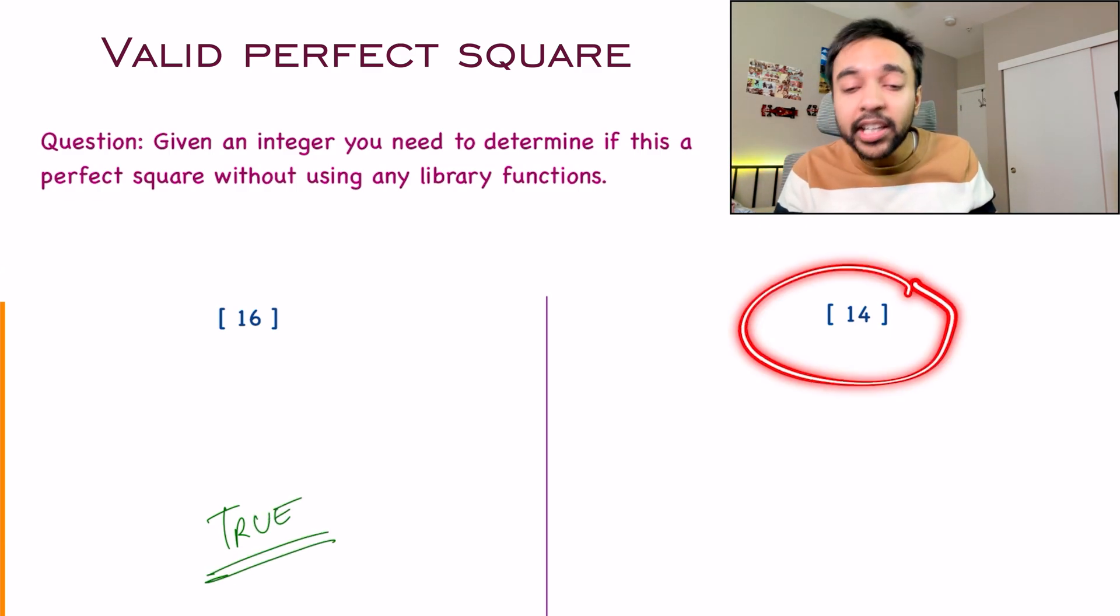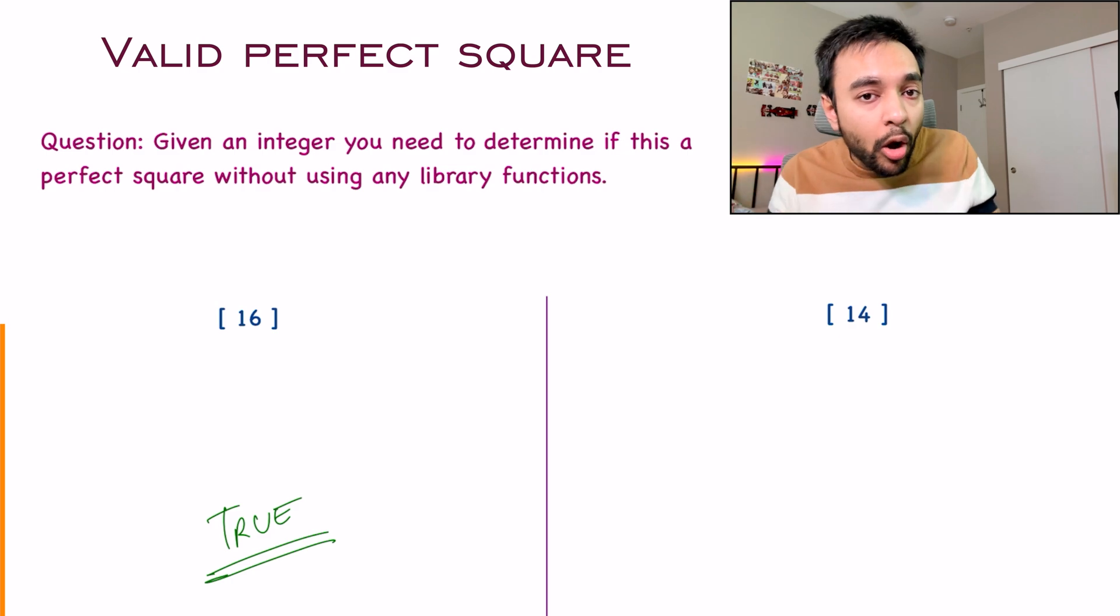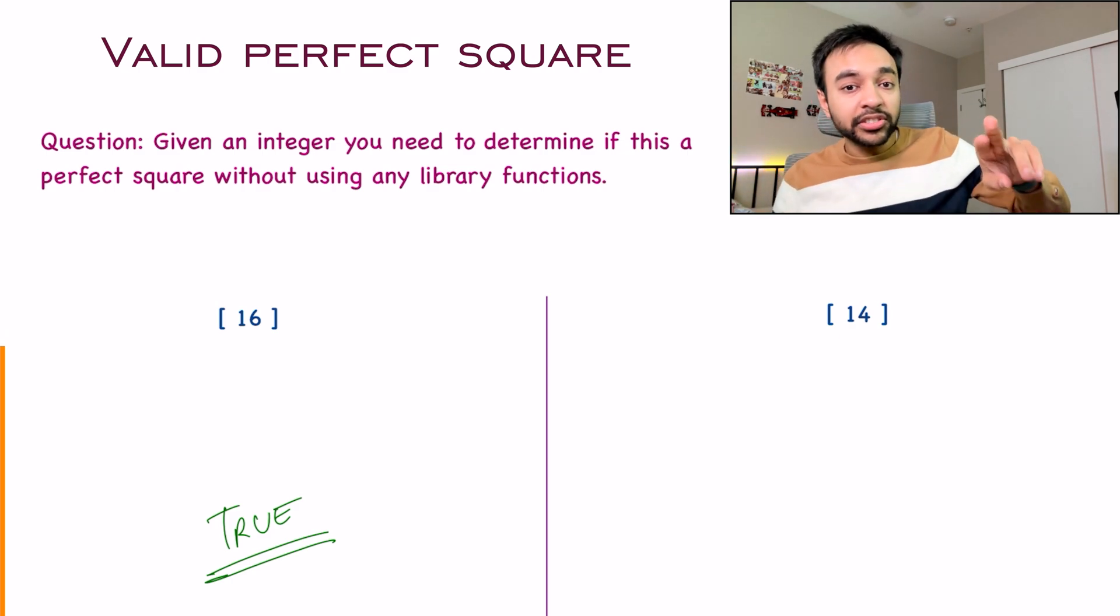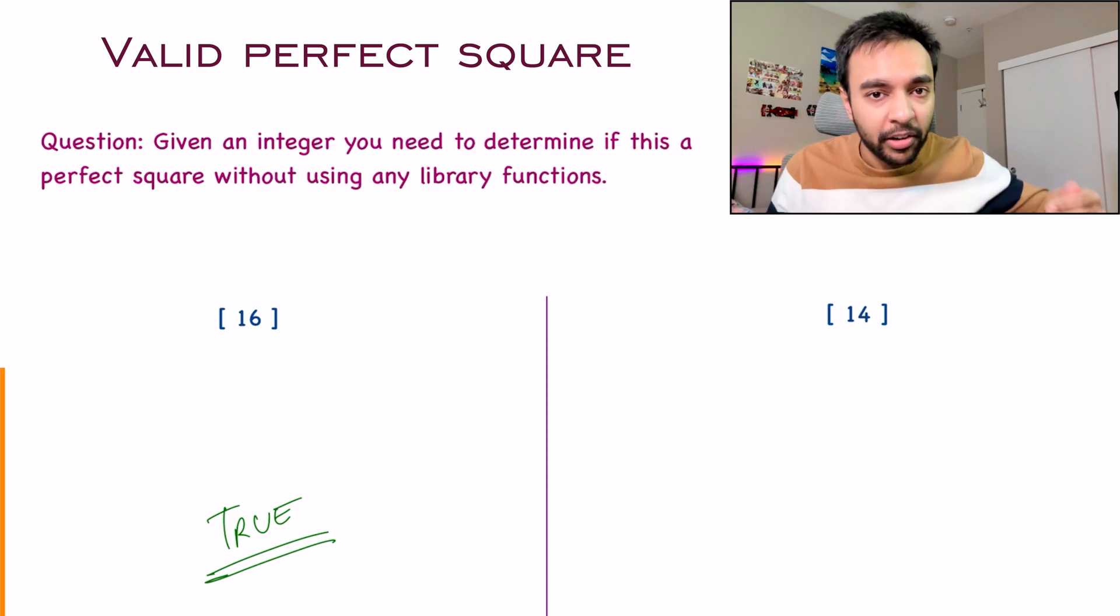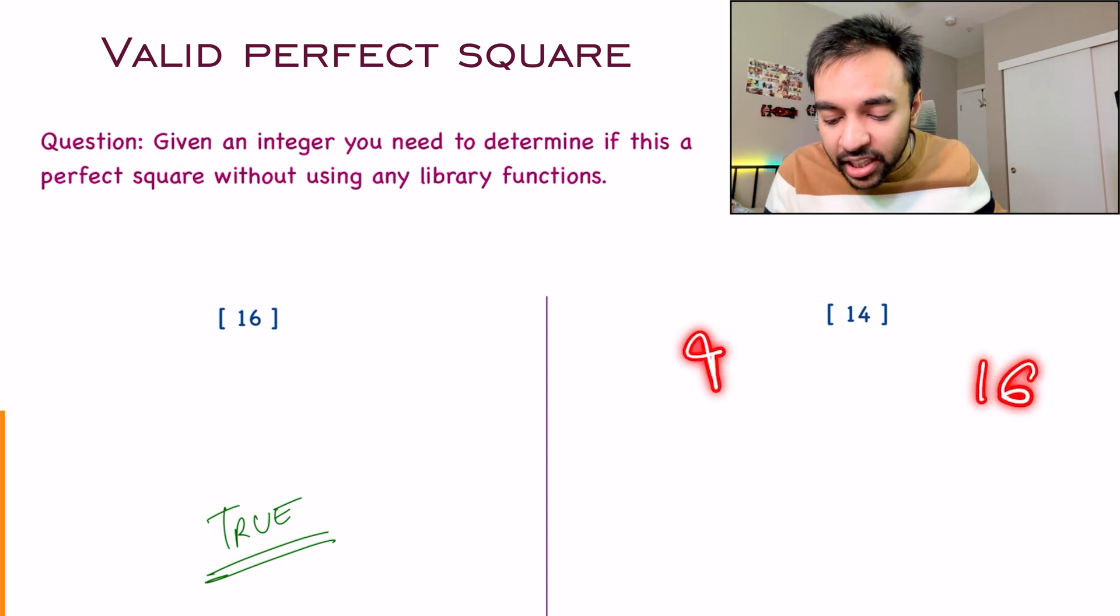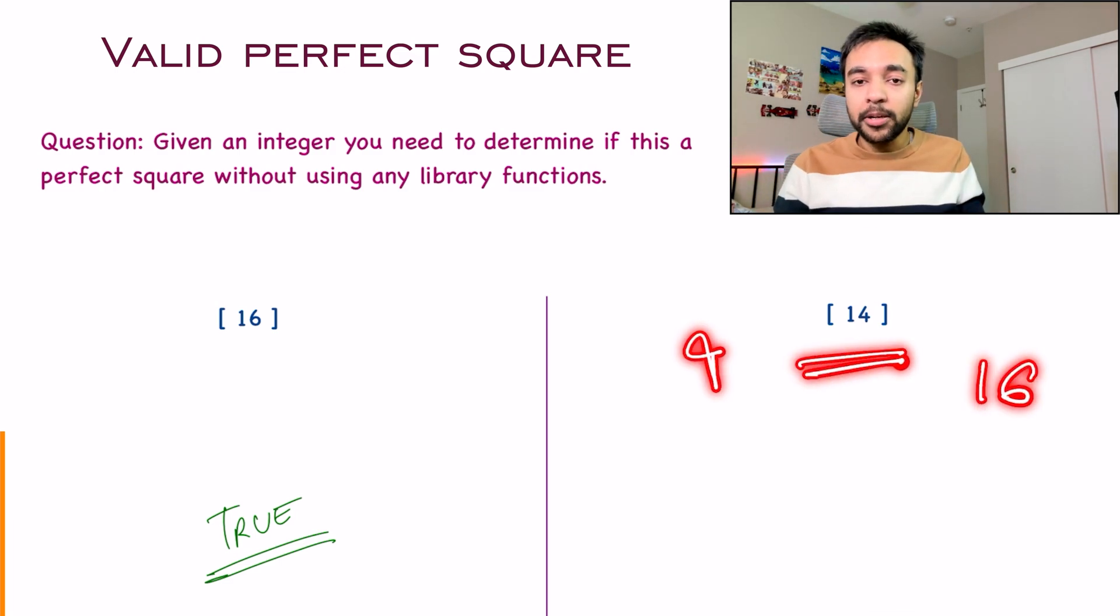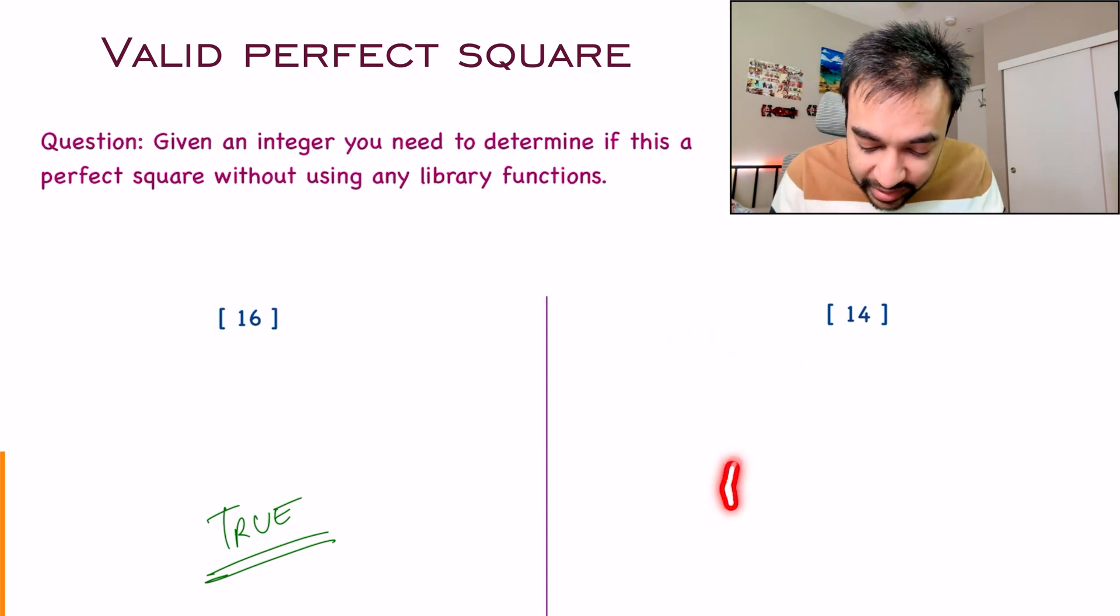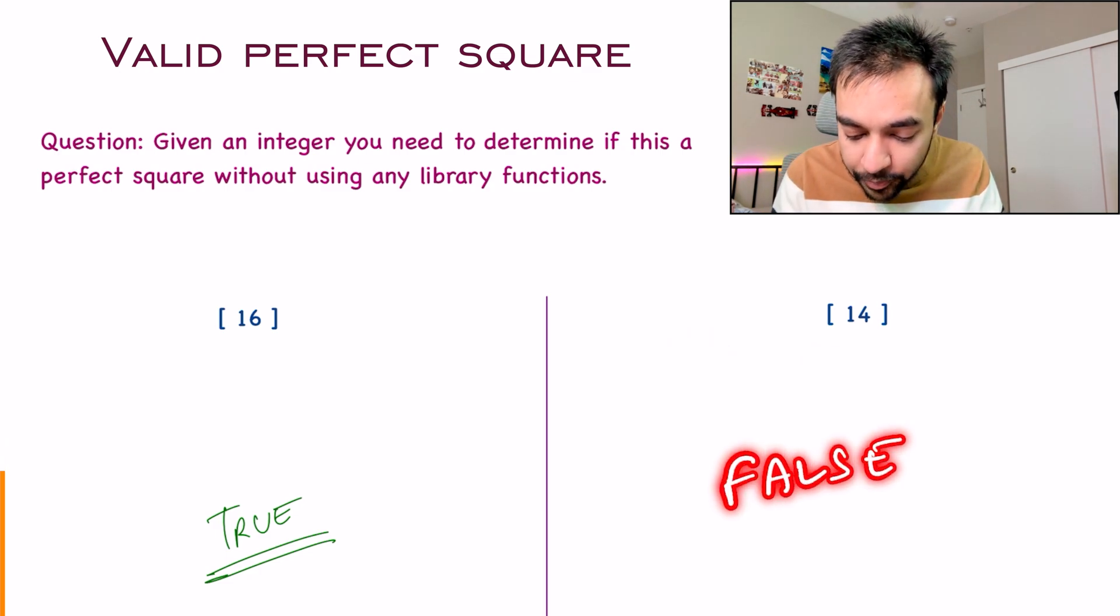For the second test case, I have the integer 14. You cannot multiply any two integers that are same to get the number 14. 3 into 3 is 9 and 4 into 4 is 16, so you will never get to 14. For this particular test case, you need to return false as your answer. You might be wondering, all of this is pretty simple. Why is this problem a little tricky?